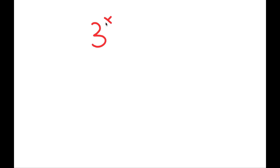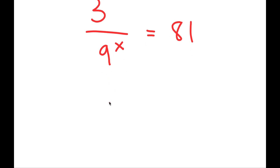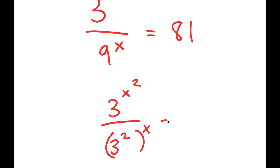In this video, I'm going to solve the equation 3 to the power of x squared over 9 to the power of x is equal to 81. To solve this, I want all my terms in the same base, which would be base 3 since all of these are powers of 3. We don't need to change 3 to the power of x squared. But 9 I'm going to change to 3 squared, giving 3 squared to the power of x. And 81 I'm going to change to 3 to the power of 4.